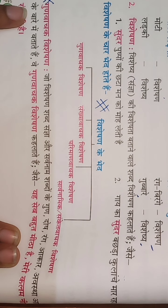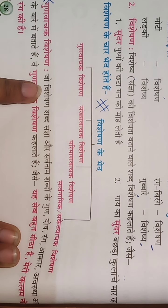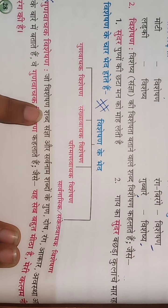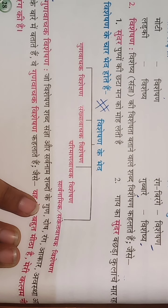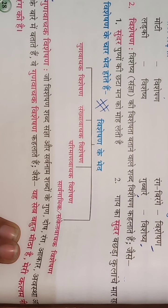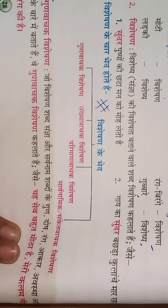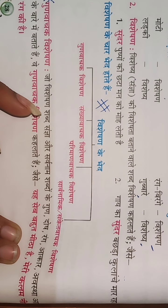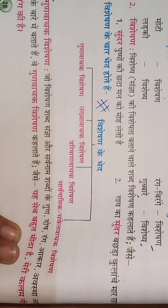First, Guna Vachak Visheshan: woh Visheshan shabd jo sangya aur sarvnaam ke gun, dosh, rang, aakar, avastha ke baare mein batate hain, vahe Guna Vachak Visheshan kehlate hain. For example: 'Yashep bahut meetha hai' — meetha is Guna Vachak Visheshan. 'Mere kalam nilay rang ki hai' — nilay is Guna Vachak Visheshan.